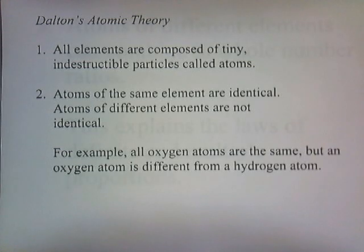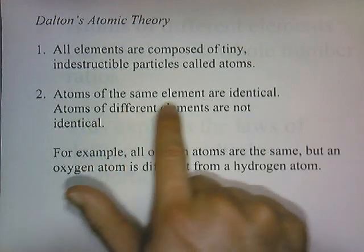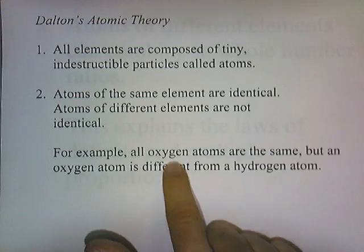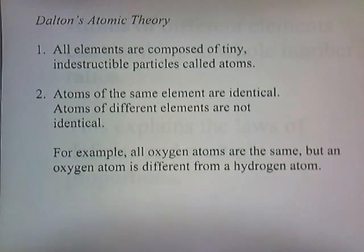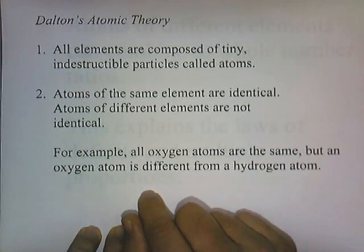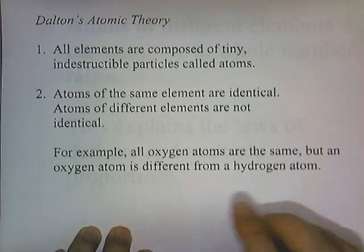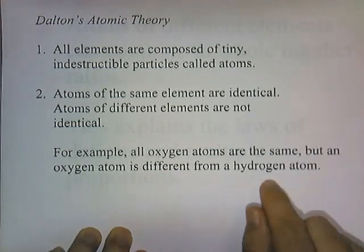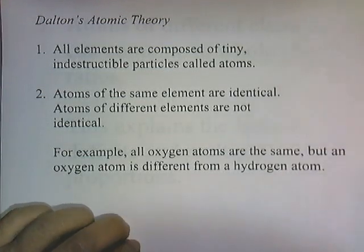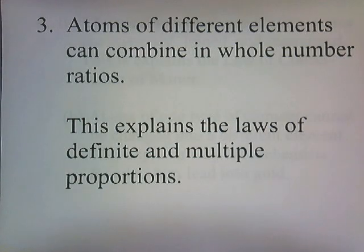All elements are composed of tiny indestructible particles called atoms — an idea taken from Democritus. Atoms of the same element are identical; atoms of different elements are not identical. For example, all oxygen atoms are the same, but an oxygen atom is different from a hydrogen atom. All oxygen atoms would have the same shape and density — one oxygen atom would look exactly like another. But an oxygen atom would look different from a hydrogen atom, perhaps a different shape, color, or density. Atoms of different elements can combine in whole number ratios, which explains the law of definite and multiple proportions.